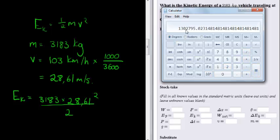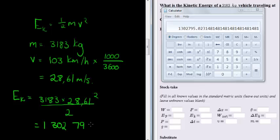So we have that squared times 3,183 divided by 2. What do we get? It's 1,302,795.02. That looks good.